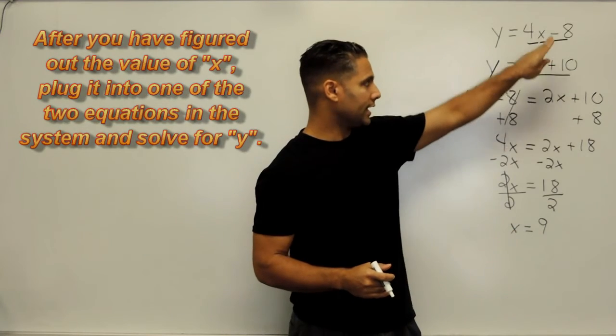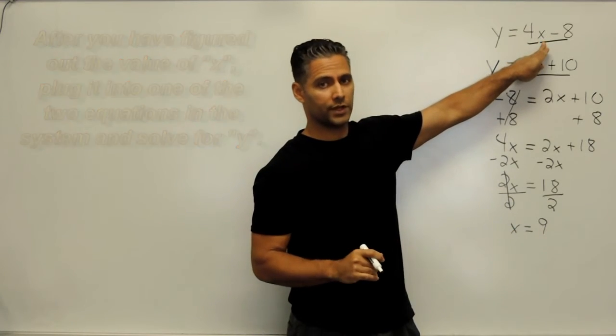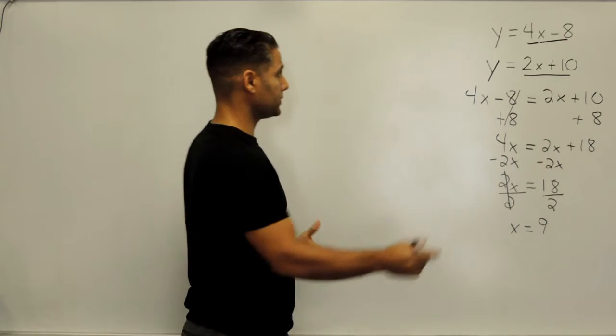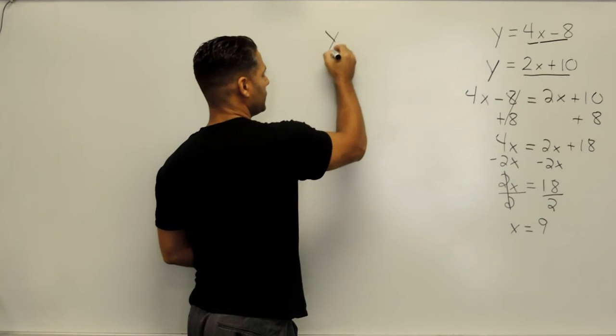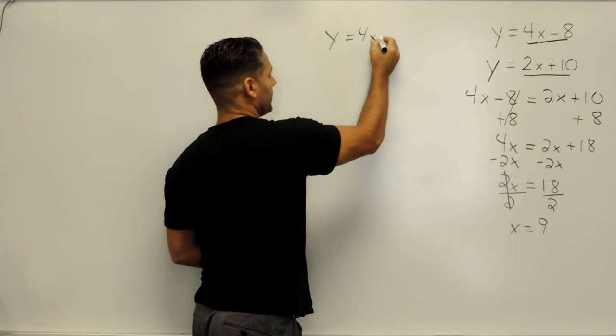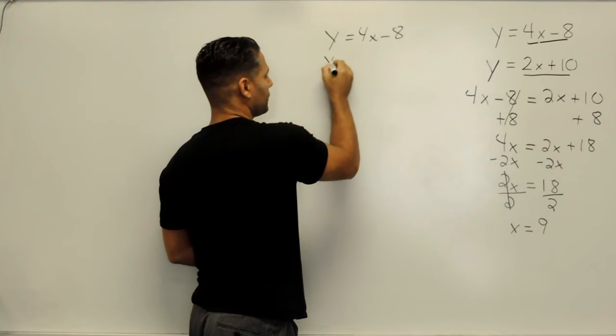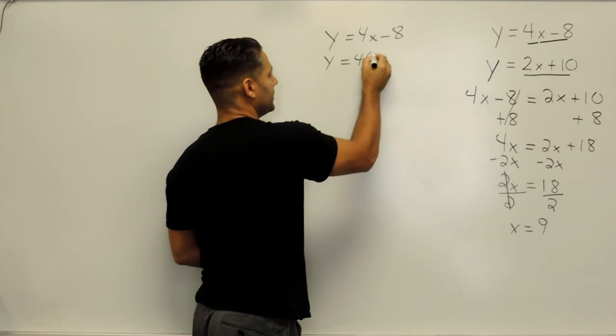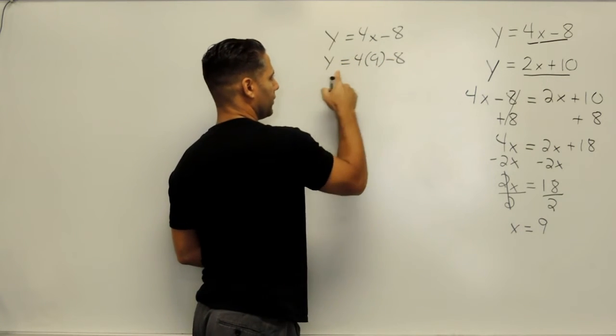Let's just take this 9 and substitute it in for x for the first equation. So what we're going to do is take y equals 4x minus 8, and substitute in for the x value, the number 9. And now we can solve for the y value.